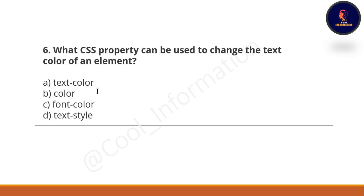Next question: What CSS property can be used to change the text color of an element? Option A: text-color. Option B: color. Option C: font-color. Option D: text-style. These options are very confusing. The correct option is option B, which is 'color' — not text-color or font-color, just 'color'.